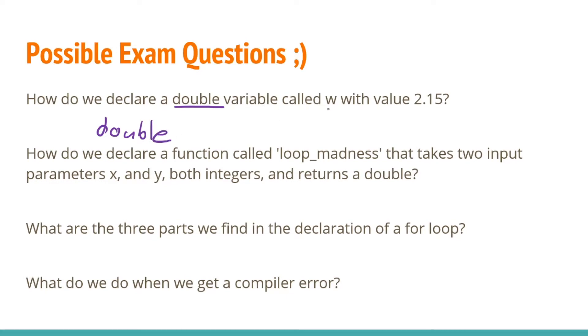Next we need to know the name of the variable. Well that we can see with w. The variable is called w. So we'll write a w. So we have double w equal. On the right hand side of this equal sign, we'll have our value. Our value is 2.15. We'll need a semicolon to finish off this line. And we have declared a double variable called w with a value of 2.15.